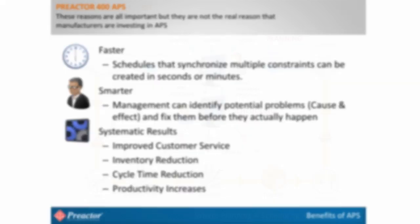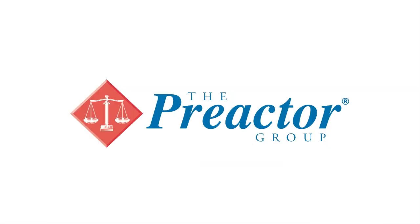Some companies do not have a full ERP system. Preactor 400 GMPS can be integrated with Preactor 400 APS to provide both planning and scheduling without ERP. This graphic shows what data is passed between APS and GMPS. For more information about Preactor, please contact us or visit our website at www.preactor.com.